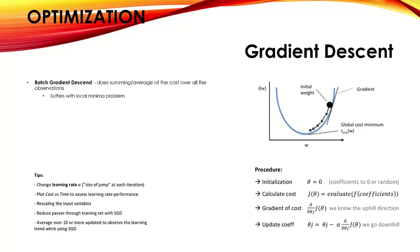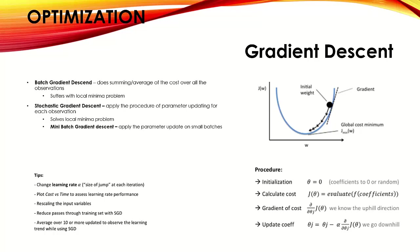Types of gradient descent: Batch gradient descent works on a full batch, summing or averaging the cost — but it suffers from local minima problems. Stochastic Gradient Descent (SGD) updates parameters over each observation, solving the local minima problem but being very slow. Mini-batch gradient descent applies parameter updates on small batches, sitting between SGD and batch gradient descent. Other variants include Momentum, Nesterov, Adagrad, Adadelta, and Adam — Adam (Adaptive Moment Estimation) being the most common.